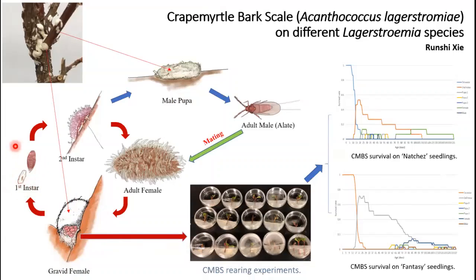I then transferred the newly hatched first instars into small feeding chambers, which consist of agar media and a piece of quakemoto cuttings. These feeding chambers allowed me to document the entire life cycle of the quakemoto bark scale, and the life history data was then analyzed to generate results in terms of biological parameters such as the stage-specific survival rate of these insects on different host plants.